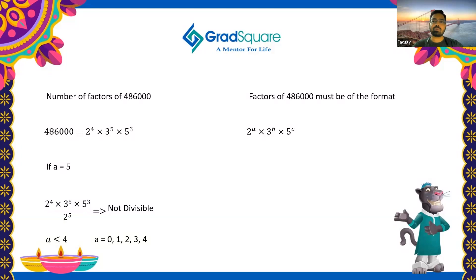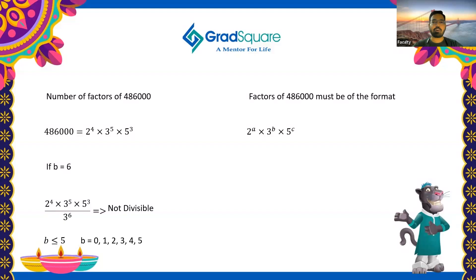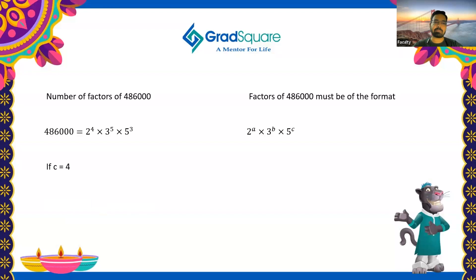Now let's experiment with the values of b. If b equals 6, dividing by 3⁶ is not possible, so b must be less than or equal to 5, giving possible values: 0, 1, 2, 3, 4, and 5 — six values total. For c, testing 5⁴ shows it is not divisible since only 5³ is in the numerator, so c must be less than or equal to 3, giving possible values: 0, 1, 2, and 3.